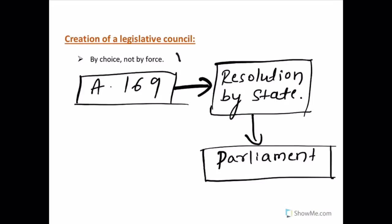Under Article 169 of the Constitution, Parliament may by law create or abolish the second chamber in a state if the legislative assembly of that state passes a resolution to that effect by a special majority.